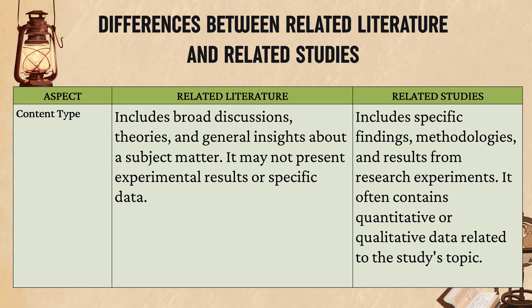By content types, related literature includes broad discussions, theories, and general insights about a subject matter. It may not present experimental results or specific data, meaning it might not have exact numbers or specific results from experiments, but it helps us see the bigger picture.